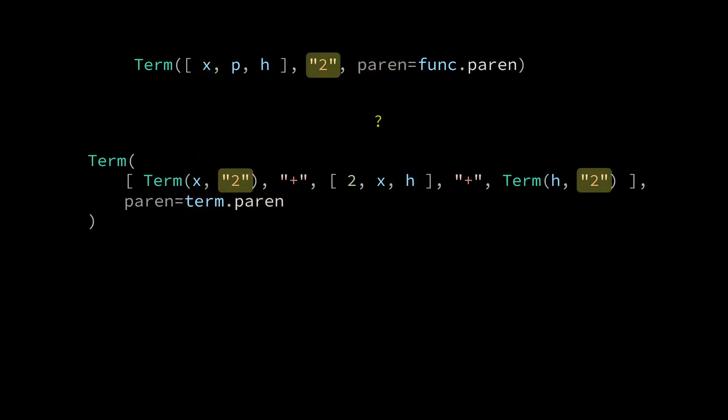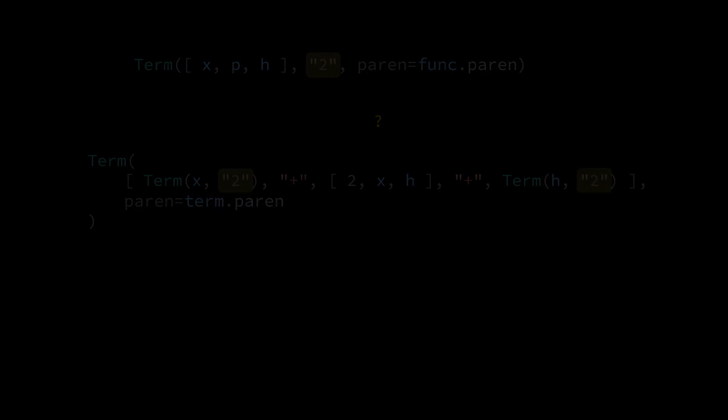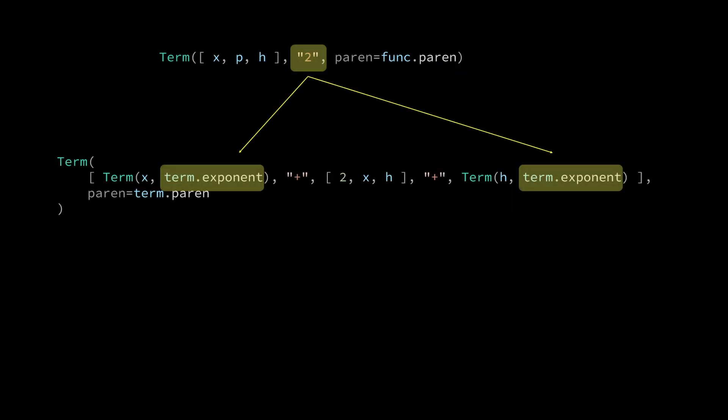We pass in the parentheses from the previous term component using term dot paren. And there is one last item left, there is still no correspondence between the exponents. Now we could construct a math string for the number 2 and pass it into both term components. However, in this case I think it's easier to obtain the exponent in x plus h squared by using the term's exponent attribute. We can pass in term dot exponent into the x squared and h squared sites to broadcast the exponent.